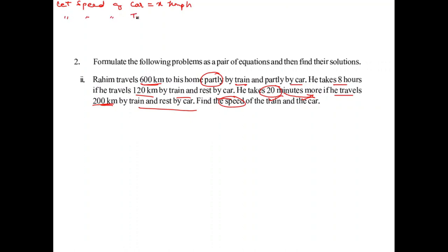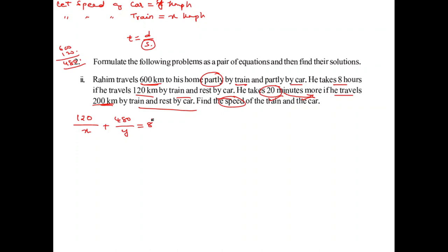Let speed of car be x km/h and speed of train be y km/h. Using time equals distance by speed, the first journey: 120 by y plus 480 by x equals 8. Dividing through by 8: 15 by x plus 60 by y equals 1 (equation 1). The second journey: 200 by y plus 400 by x equals 25 by 3, which reduces to 8 by x plus 16 by y equals 1 by 3 (equation 2).